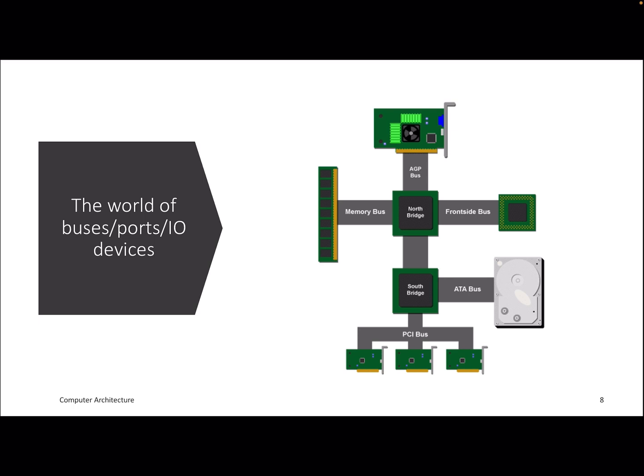Now we'll jump into the world of IO. We've discussed the notion of interrupts and what the pipeline does when handling an interrupt handler. Beyond that, there are multiple things in our system: USB ports, cameras, accessories — multiple devices that you want to connect to your system.